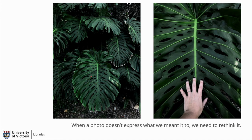When a photo doesn't express what you mean it to, you need to rethink it. I found an enormous leaf in Hawaii and I took a photo of it, but the photo didn't capture just how large it was. I didn't have anything or anyone with me to stand next to it, so I eventually thought to take a picture with my hand next to the leaf. When you're taking a photo and it doesn't tell the story you mean it to, step back, rethink it, take multiple photos, move your feet, and reframe it.